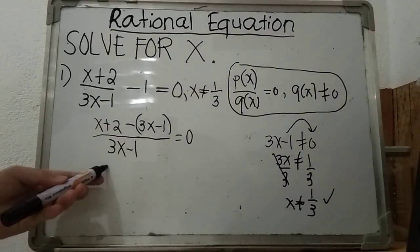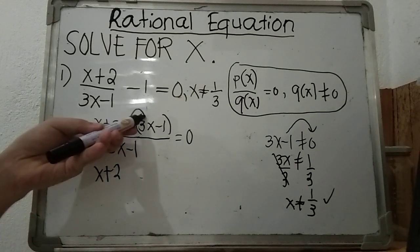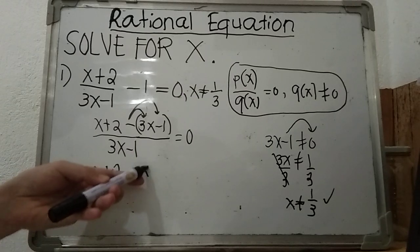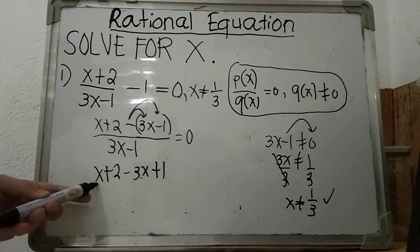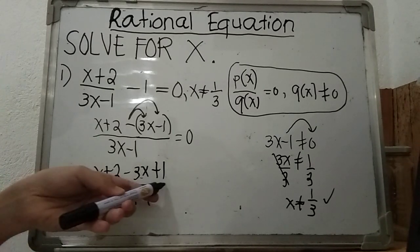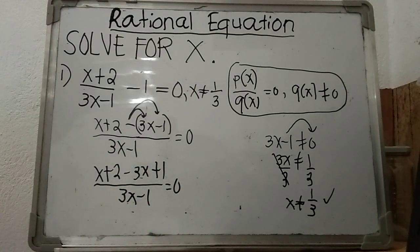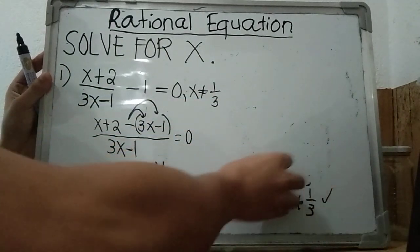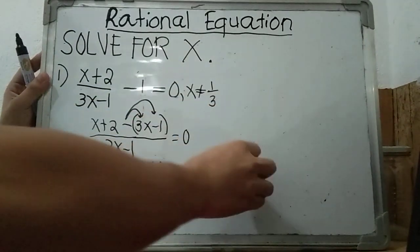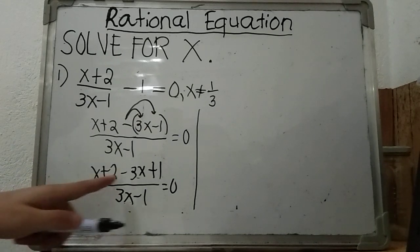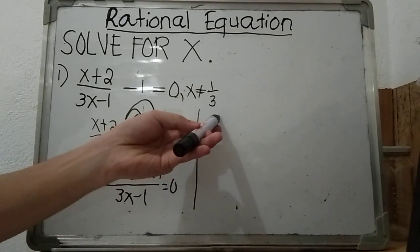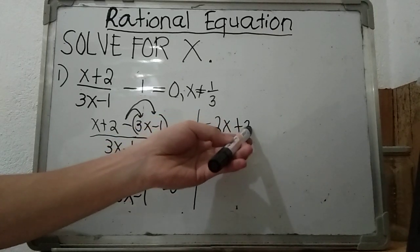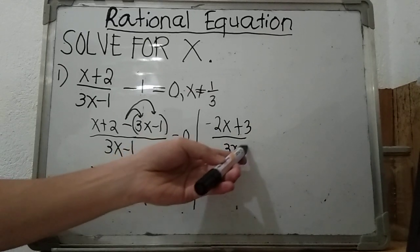We have x plus 2, and we use the distributive property, distributing the negative sign to every term of the subtrahend. Negative times 3x is negative 3x; negative times negative 1 is positive 1, over 3x minus 1, equals 0. Combining like terms: x minus 3x is negative 2x, and positive 2 plus positive 1 is plus 3, giving negative 2x plus 3 over 3x minus 1 equals 0.